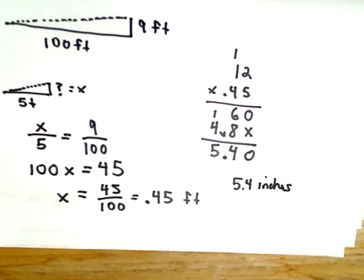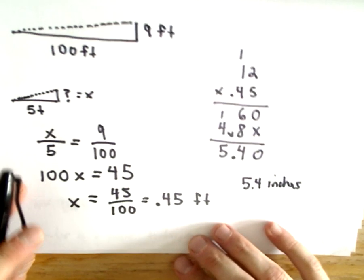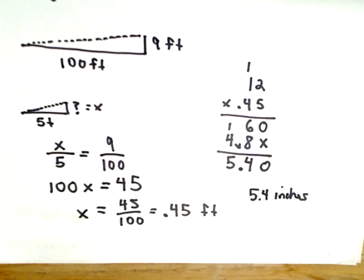Hopefully nothing too crazy here. Just setting up basic proportions, doing some cross multiplication, and going from there. I hope these examples make some sense. You certainly may see some more complicated proportion examples. But hopefully these will give you a basic intuitive idea on how to start them.